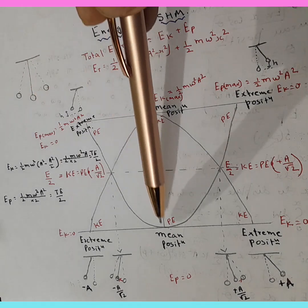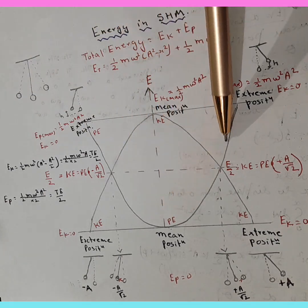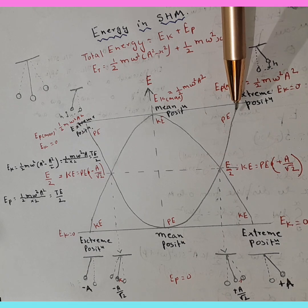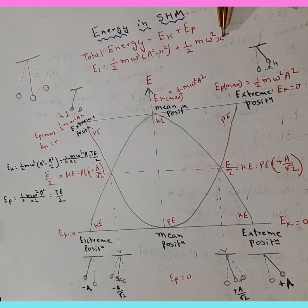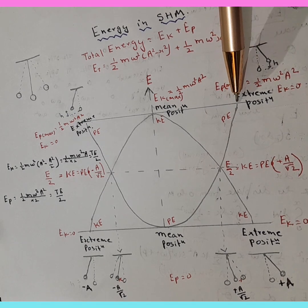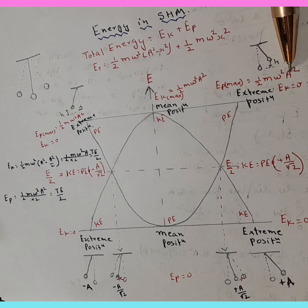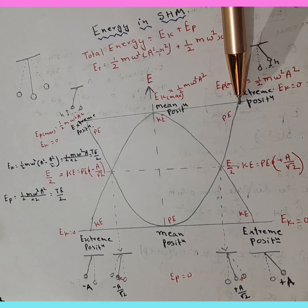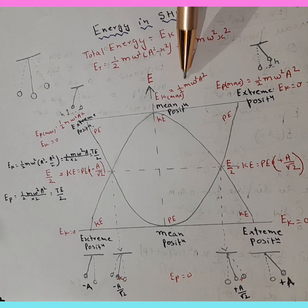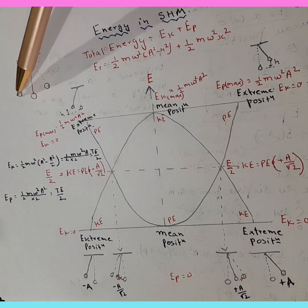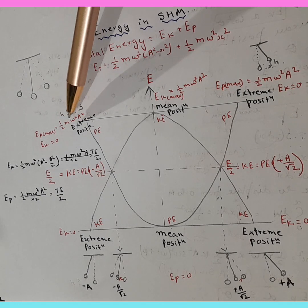Moving toward the positive direction, the bob gains height, so it is gaining potential energy. The formula for potential energy is half m omega squared x squared. When it reaches the extreme, x takes the value of amplitude A, so potential energy equals half m omega squared A squared — the maximum potential energy at positive extreme. On the other side, the same thing happens: potential energy keeps on increasing, and at the negative extreme it also equals half m omega squared A squared.